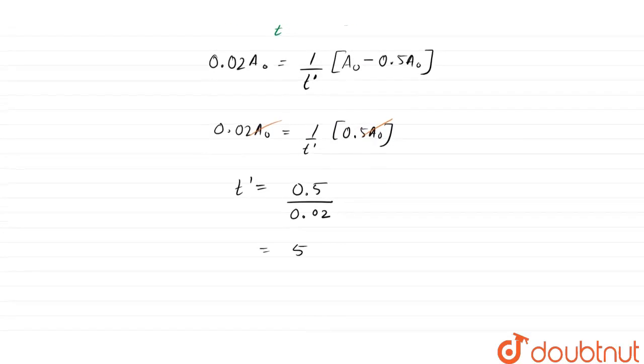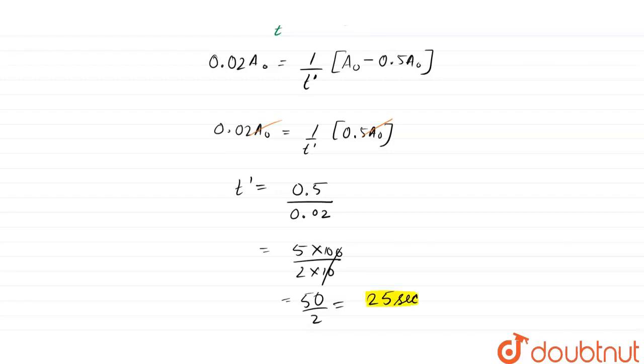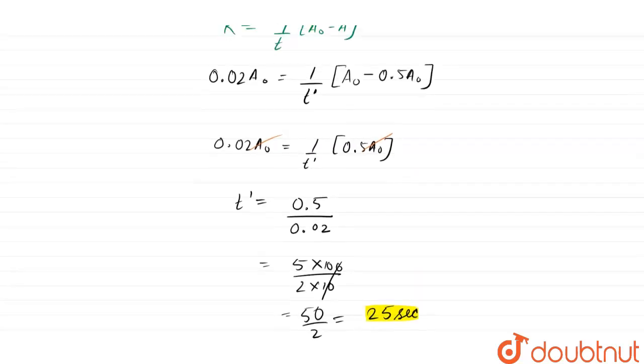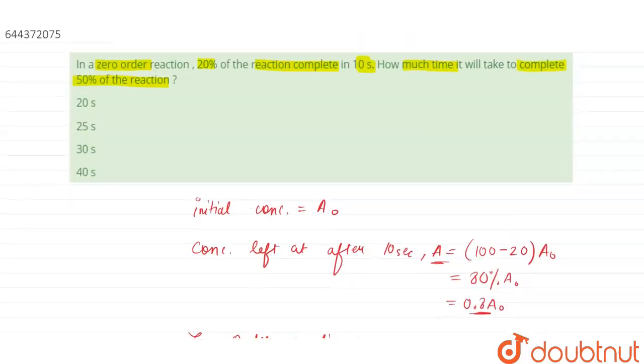On solving this we get 5 times 100 upon 2 times 10, which comes out to be 50 by 2, which is 25 seconds. So the time for the completion of 50% of the reaction will be 25 seconds.